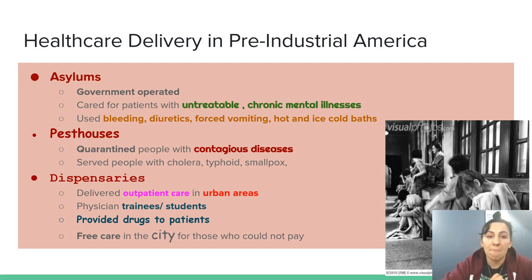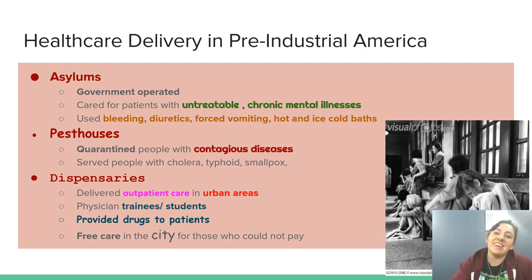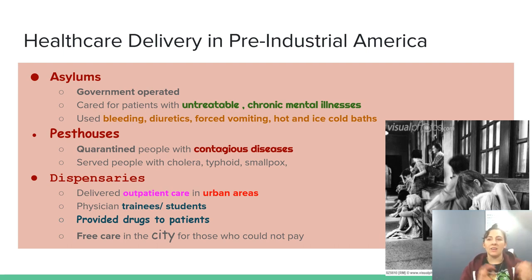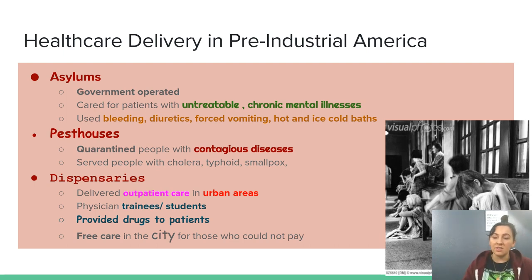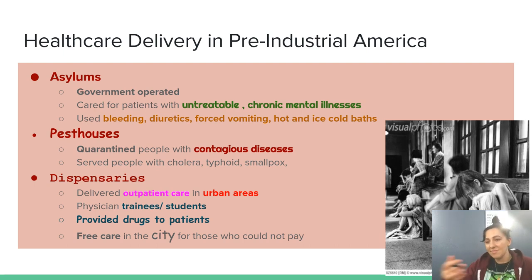Pest houses were basically quarantines. They would quarantine people who had terrible contagious communicable diseases like typhoid, smallpox, and cholera. There was no treatment — they just threw patients in and let them spend the rest of their days there, preventing the disease from spreading to other people. That was the whole point.